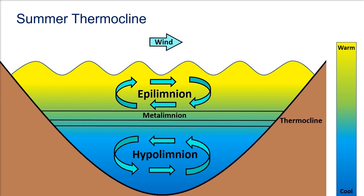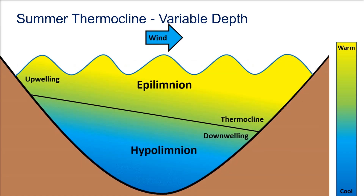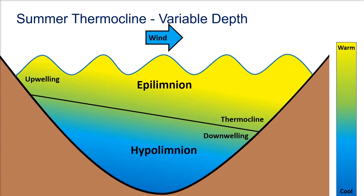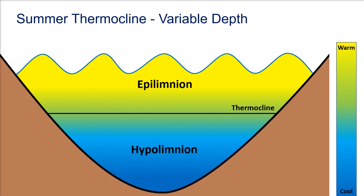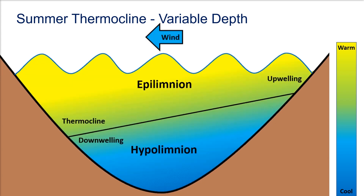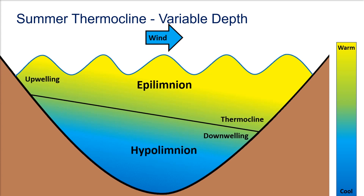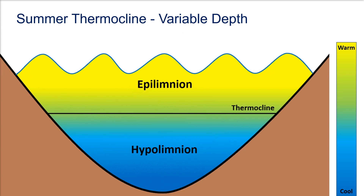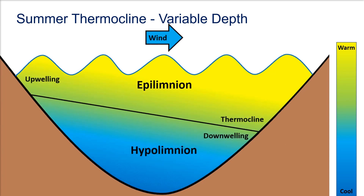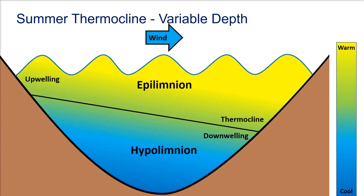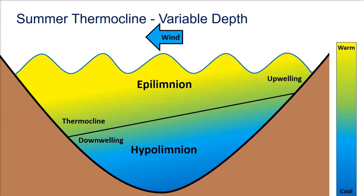It is important to understand that the depth of the thermocline is not static. Rather, it can change by as much as 10 to 20 meters on a daily basis due to wind. When wind blows across the surface, warm water in the surface layer is pushed away to the far end and downwelling occurs. When wind blows from the opposite direction, upwelling of cold bottom waters will occur at the same side of the lake. When the wind stops, several cycles of internal movements can occur over periods of days, so the depth of the thermocline in most large lakes is constantly changing by many meters.